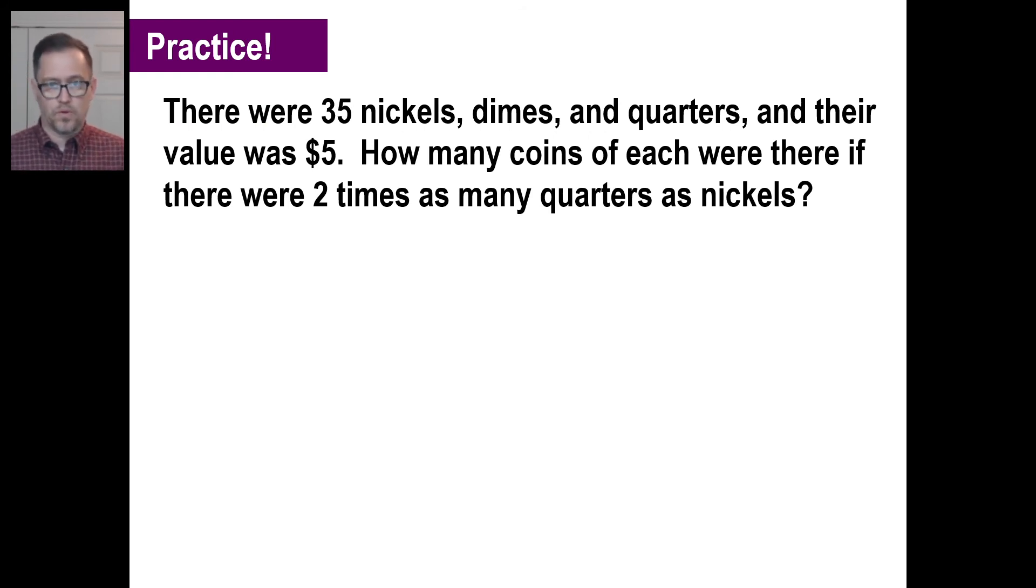There were 35 nickels, dimes, and quarters. Stop. There's an easy equation. Nickels plus dimes plus quarters equals 35. Their value was $5, in other words, 500 cents. So 5 times the nickels plus 10 times the dimes plus 25 times the quarters is 500 cents. There were two times as many quarters as nickels. So the number of quarters is 2 times the number of nickels. So if q is 2n, then we have 2n plus 1n, that gives us 3n plus the d gives us 35.